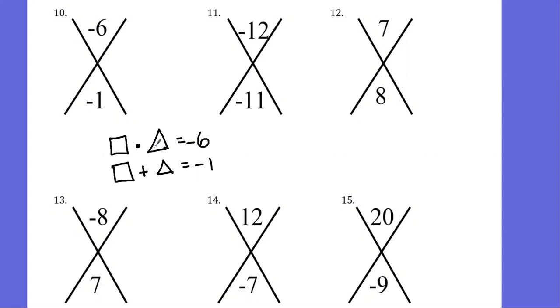Now you need to think which of these factor pairs would at the same time add to give me negative one. I'm not going to be able to use one and six to make that happen, but I will be able to use two and three.